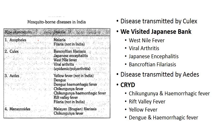For mosquito-borne diseases: Anopheles and malaria, Mansonia and Brugia (lymphatic filariasis) are unique and easy to remember. For Culex, the mnemonic is 'Visited Japanese Bank': V = West Nile virus (viral arthritis), J = Japanese encephalitis, B = Bancroftian filariasis. For Aedes, the mnemonic is CRIED: C = Chikungunya and hemorrhagic fever, R = Rift Valley fever, Y = Yellow fever, D = Dengue and Dengue hemorrhagic fever.